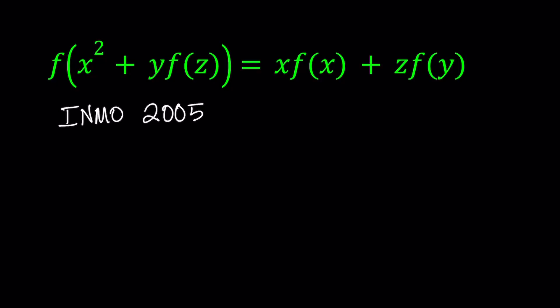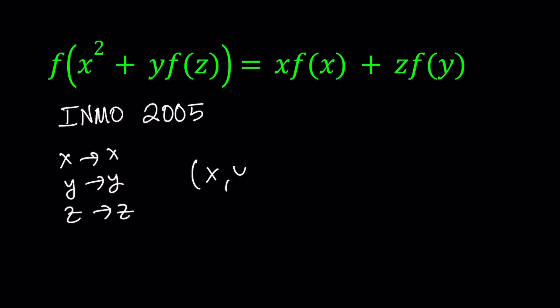To explain the notation I use: I'm going to represent substitutions with an ordered triple. So x, y, z just means replace x with x, replace y with y, and replace z with z.